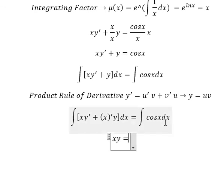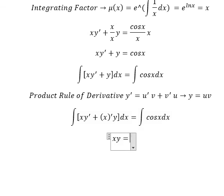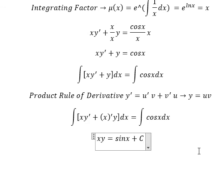The integral of cos x gives us sin x. And we add constant C. Then we divide both sides by x.